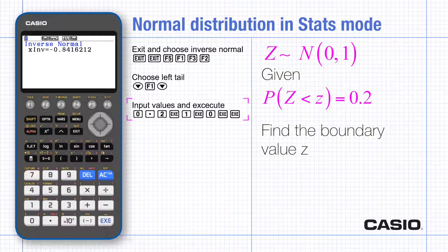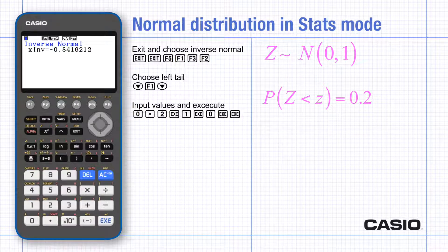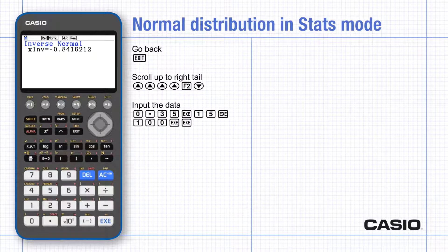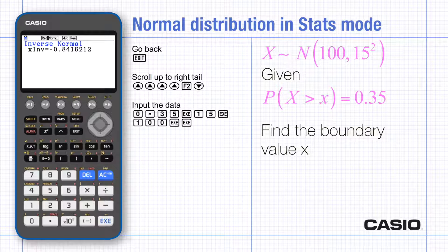Notice in this case the boundary is negative which would have been much more difficult to find using standard statistical tables. The same method can be used for a more general normal distribution without having to standardize.